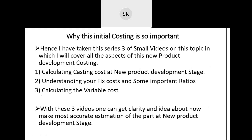I have taken a series of three small videos on this topic in which I will cover all aspects of new product development costing. This is the first video — calculating costing cost at new product development stage. The second video covers understanding fixed cost, some important ratios, and optimizing the fixed cost. The third one is calculating the variable cost. Through these three videos, one can get clarity and an idea about how to make the most accurate estimation of the part cost at the new product development stage itself.